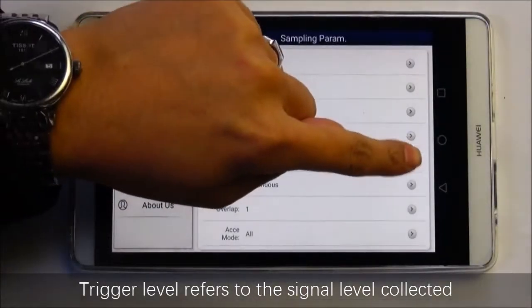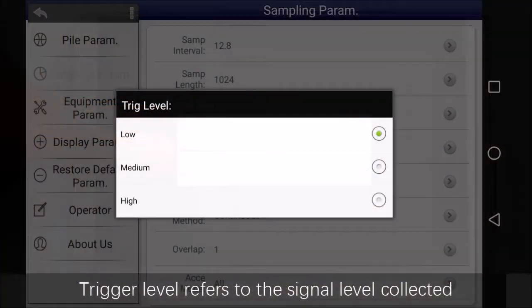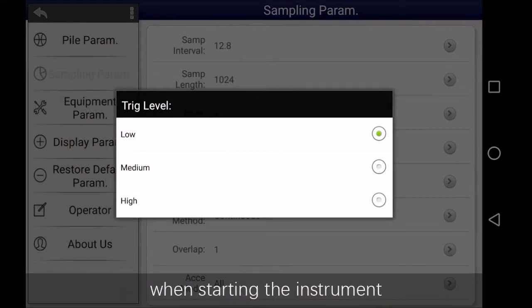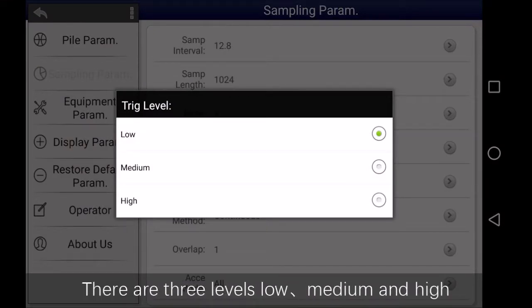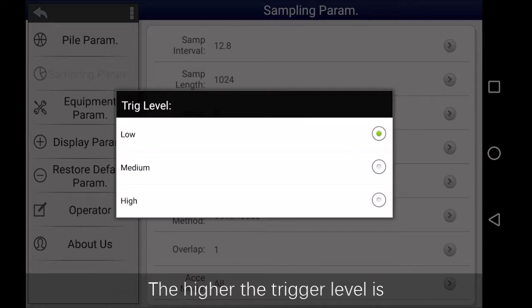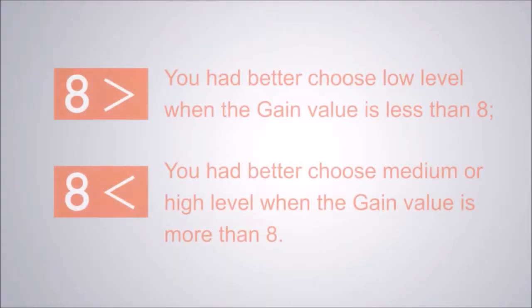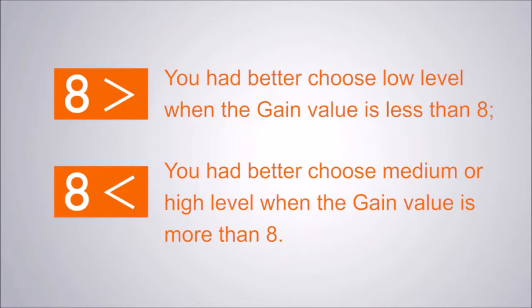Trigger level refers to the signal level collected when starting the instrument. There are three levels: low, medium, and high. The higher the trigger level is, the stronger the signal required. Generally, you'd better choose low level when the gain value is less than 8, and choose medium or high level when the gain value is more than 8.